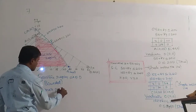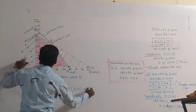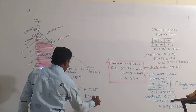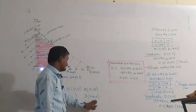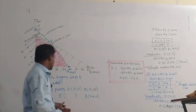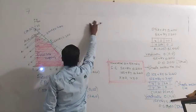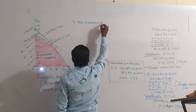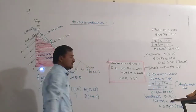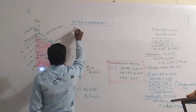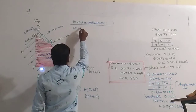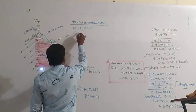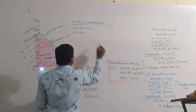The corner points are O(0,0), A(0,25), E (to be found), and D(24,0). To find the coordinate of E, we solve the two equations: 5x + 8y = 200 and 10x + 8y = 240. Subtracting: −5x = −40, so x = 8.